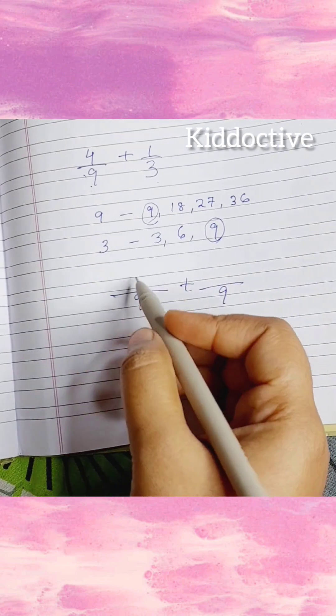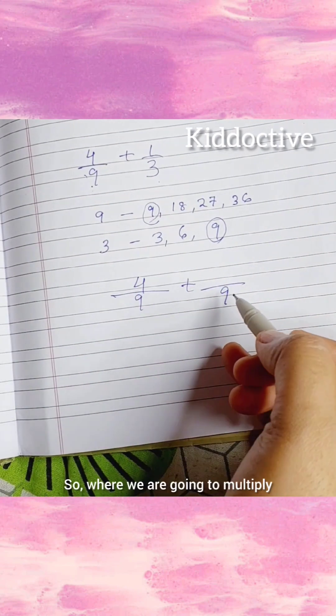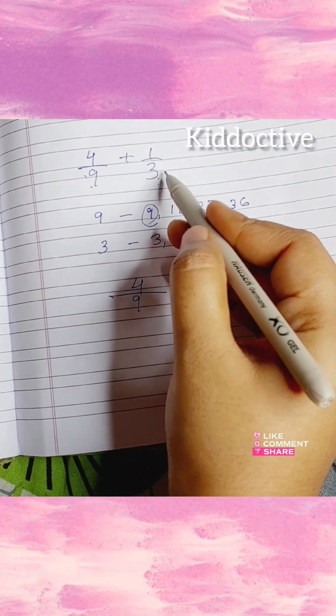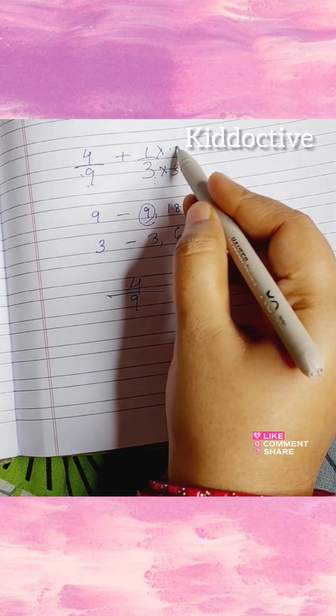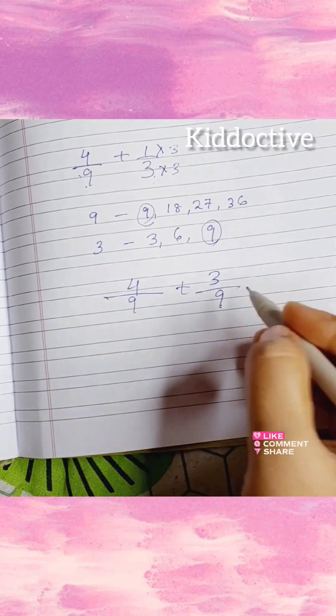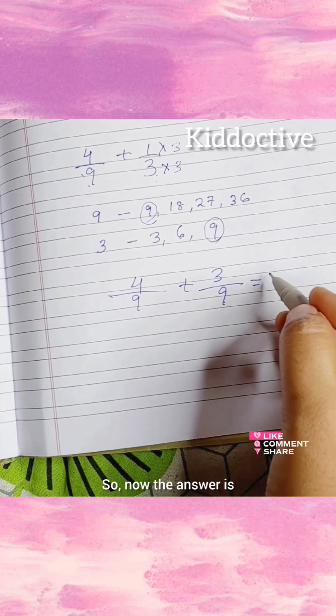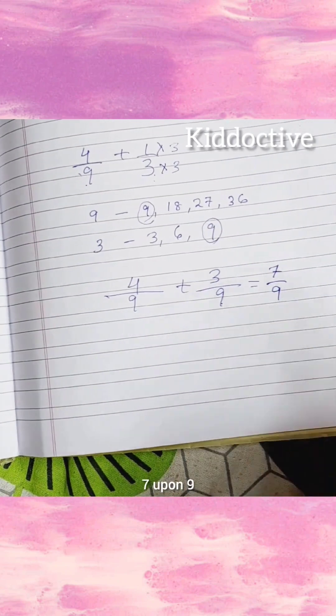Here already 9 is there, so no need to multiply anything in 4. Where we are going to multiply here? Because 3 threes are 9, so 1 times 3 is 3. Now the answer is 7 over 9.